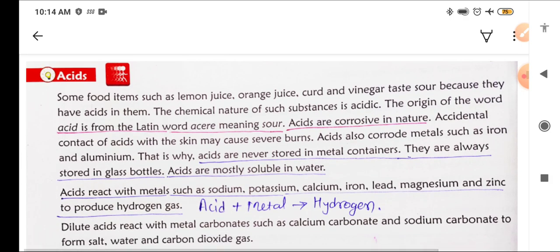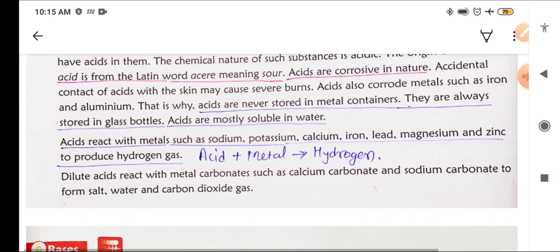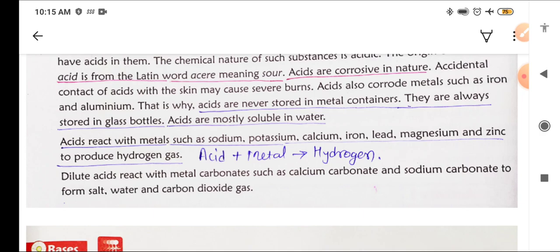Now we will start with what are acids. Some food items such as lemon juice, orange juice, curd, vinegar taste sour because they have acids in them. The chemical nature of such substances is acidic. The origin of the word acid is from the Latin word acer, which means sour.